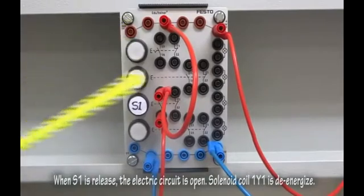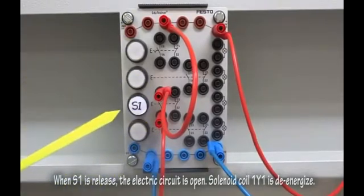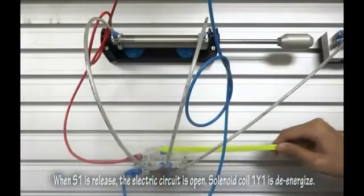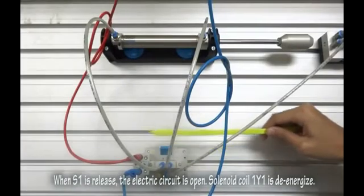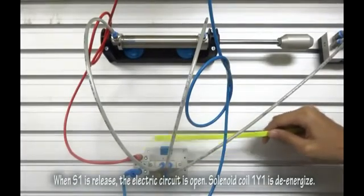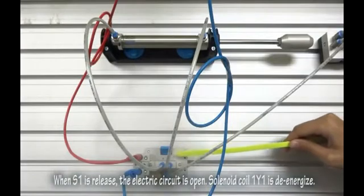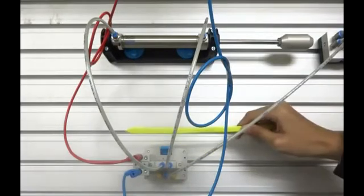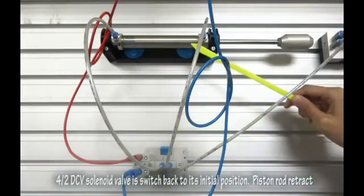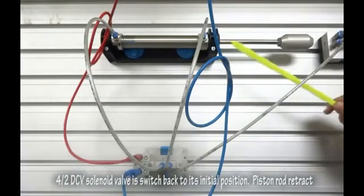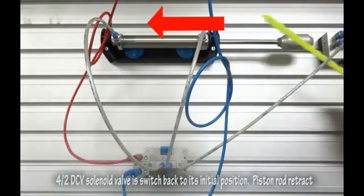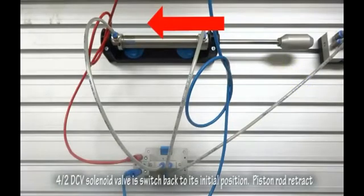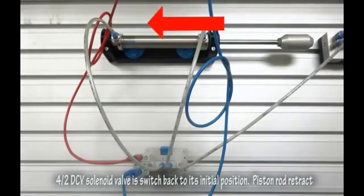When S1 is released, the electric circuit is open. Solenoid coil 1Y1 de-energized. 4 2-way DCV solenoid valve switched back to its initial position. Piston rods retract.